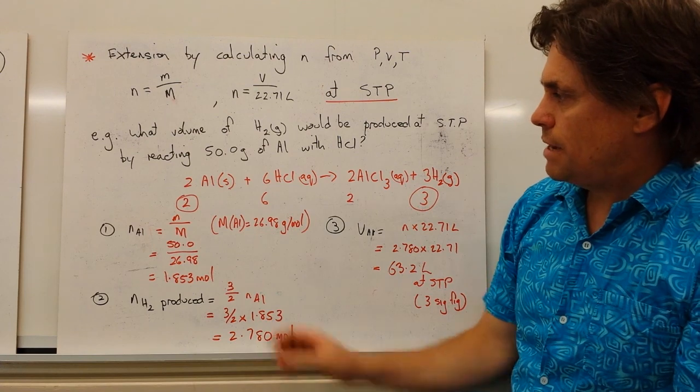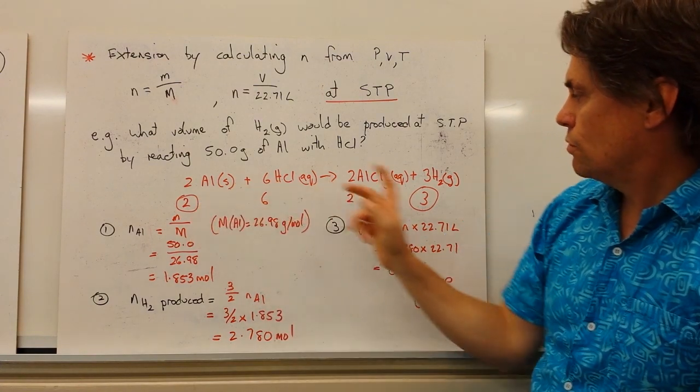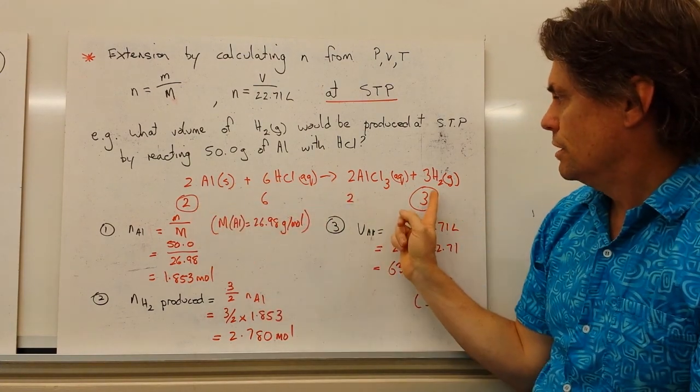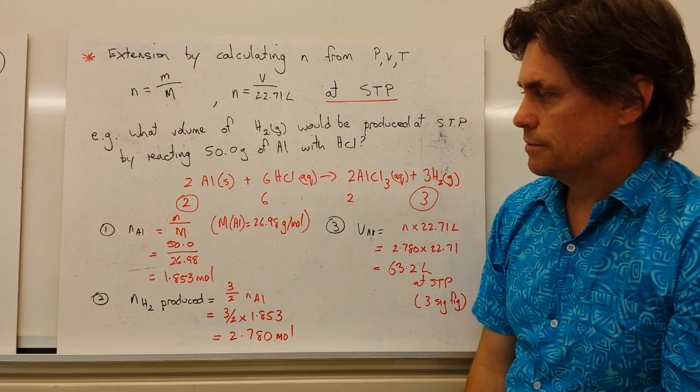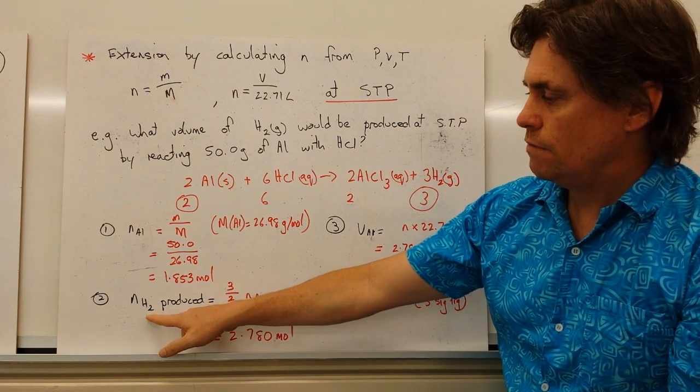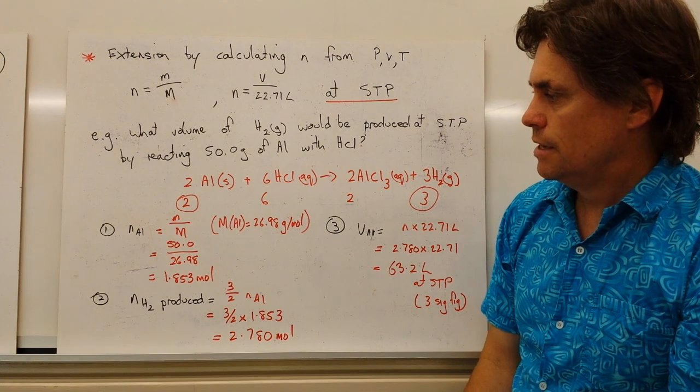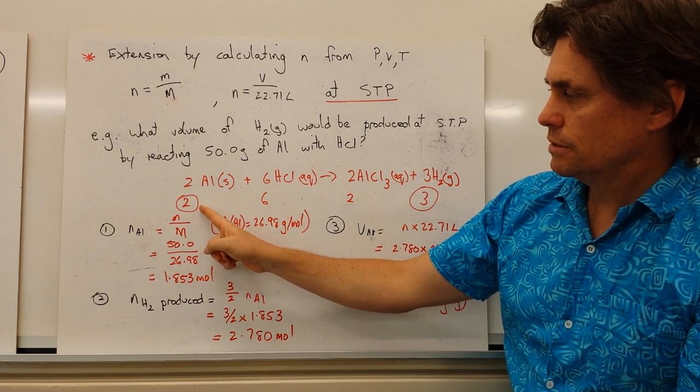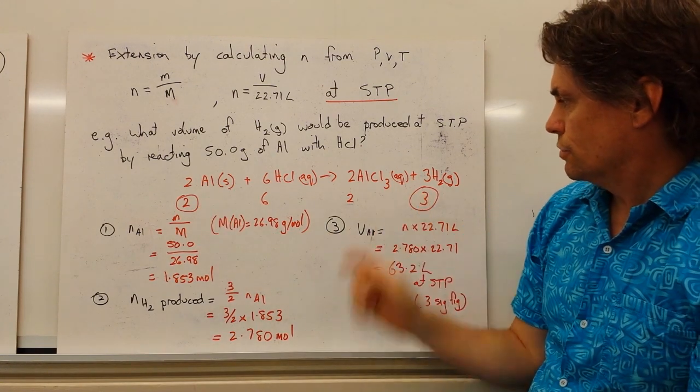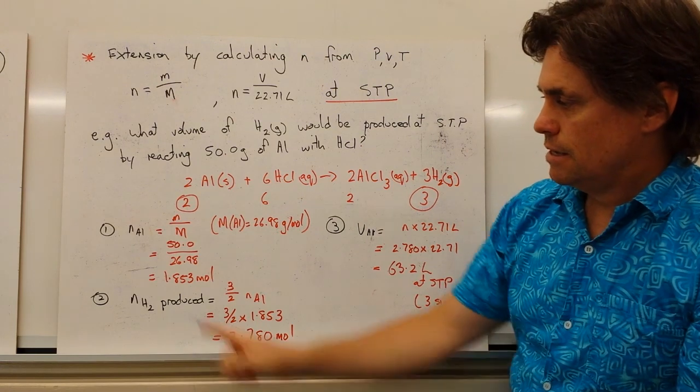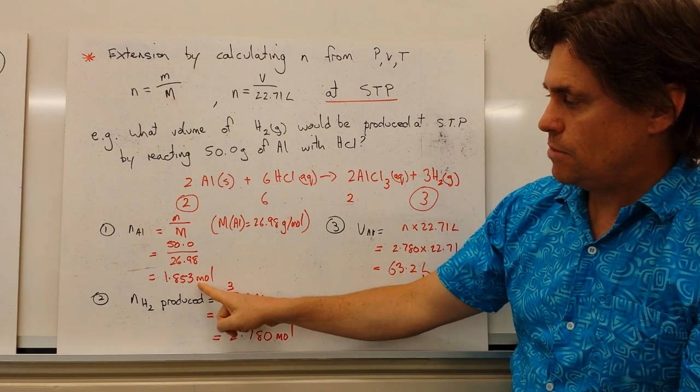Now the important part about this is the relationship or the ratio between these two reactants and products. Because that tells us how many moles of hydrogen we're producing. So for every two moles of aluminium, we produce three moles of hydrogen gas.